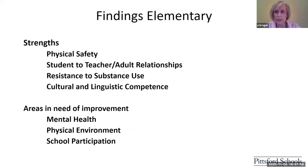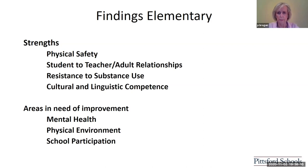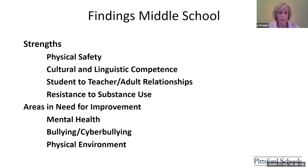Areas in need of improvement include commonalities around mental health supports and services, bullying and cyberbullying, and some things around the physical environment and physical plant. For elementary — fifth grade specifically — the strengths are common, and we added cultural and linguistic competence. Areas in need of improvement are mental health, physical, and school participation. For middle school: the same areas appear again — student-teacher-adult relationships and cultural-linguistic as strengths; mental health, bullying, cyberbullying, and some physical environment things as areas for improvement.